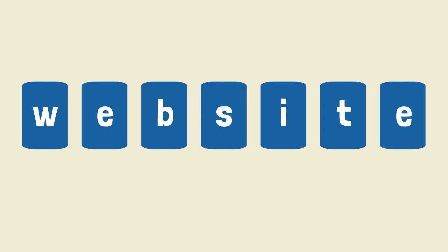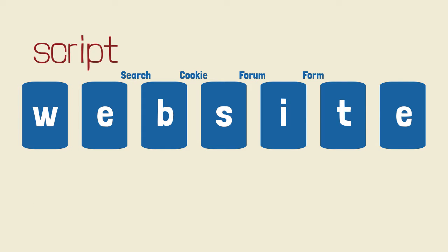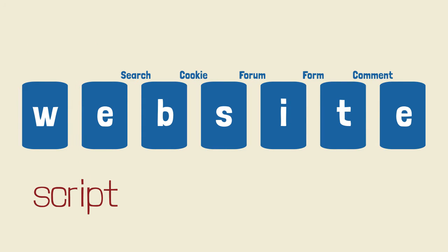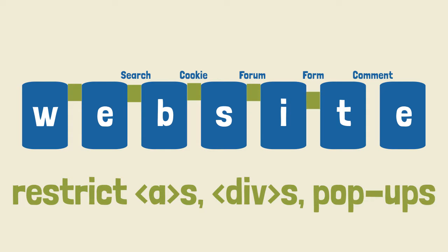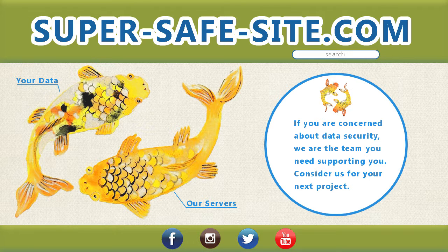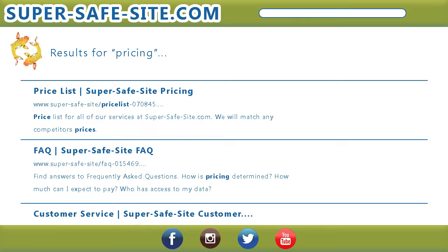Websites are vulnerable anywhere script can be injected — for example, search fields, cookies, forums, or even feedback forms and comment sections. One way to protect your site might be to eliminate the ability to make hyperlinks, use divs, and pop-ups. A website is vulnerable if it allows a user to input text that is immediately visible on the page, for example, a search result or a custom error message.